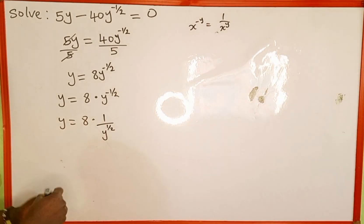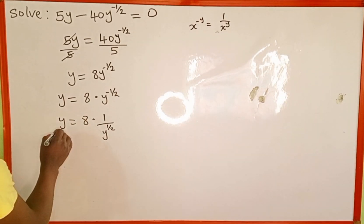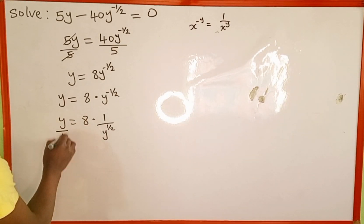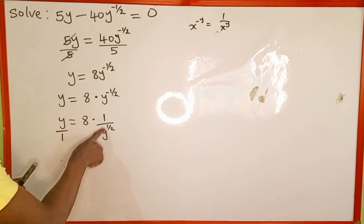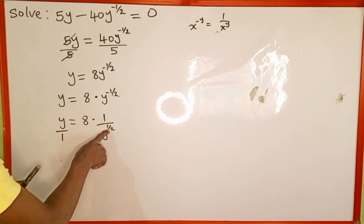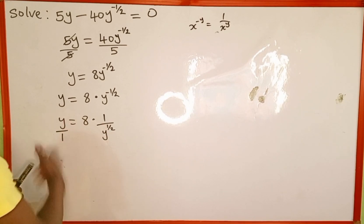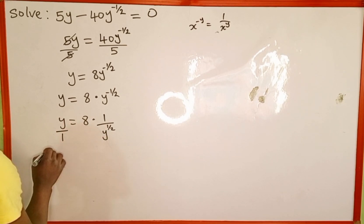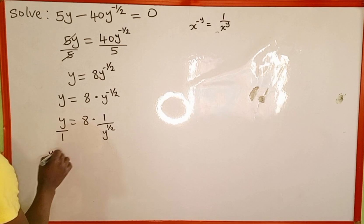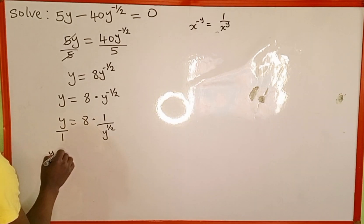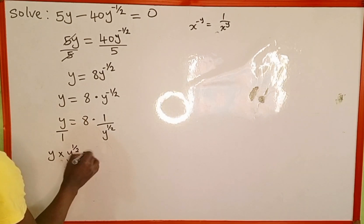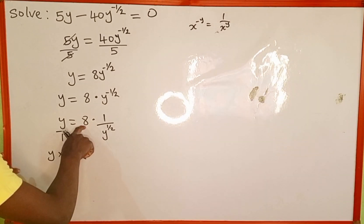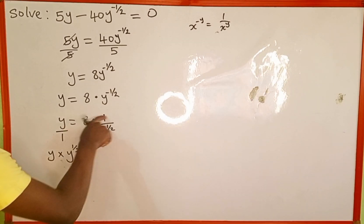The next thing we're going to do is cross multiply. This y is the same as y over 1. Then y to the power of 1 over 2 multiplied by y — we're going to have y multiplied by y to the power of 1 over 2 which is equal to 8.